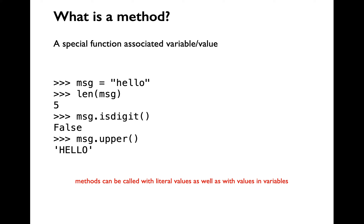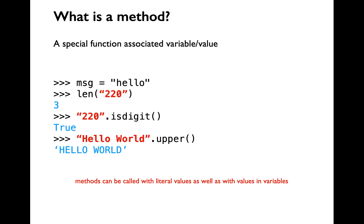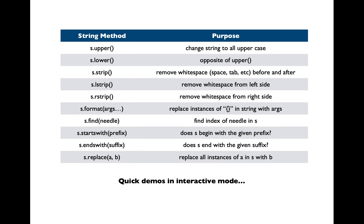Methods can also be called with literal values, just like with variables. For example, instead of message.isdigit(), you could write '220'.isdigit(), which returns true because the string contains digits. Similarly, 'hello world'.upper() converts that string to all uppercase. You can do the same with regular functions: len('220') returns a value of 3.